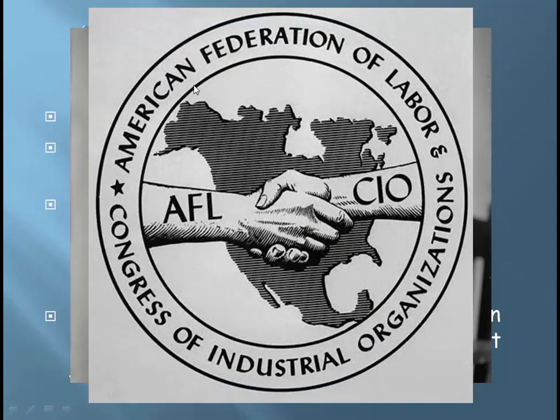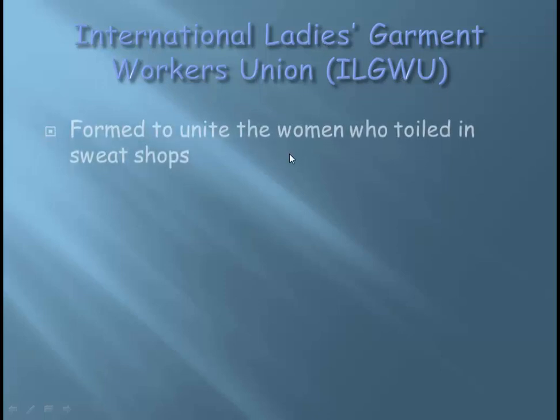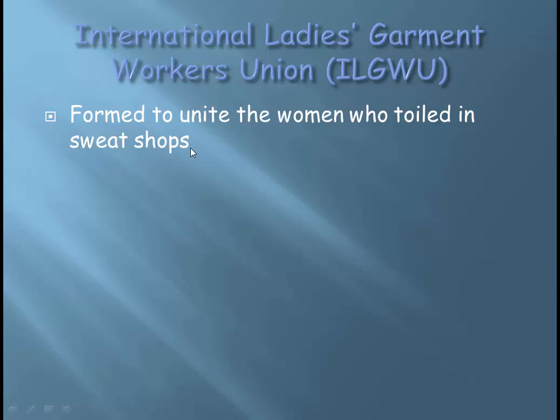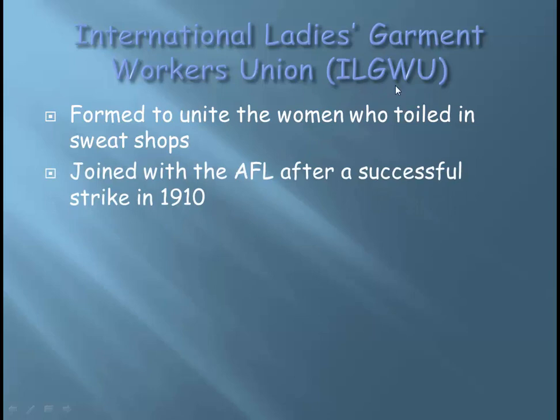Samuel Gompers later in life would have a mustache and smoke a ton of cigars. Later on, the American Federation of Labor — the AFL — merges with the industrial unions, and today there is still a labor organization known as the AFL-CIO, still a very strong labor union today. As certain groups saw the craftsmen get together in their union, women said let's do one for ourselves. Most women at that time worked in the textile industry, creating fabrics and clothing. So the International Ladies Garment Workers Union — ILGWU — was formed to unite women working in sweatshops and textile factories. They eventually joined with the AFL after a successful strike in 1910.